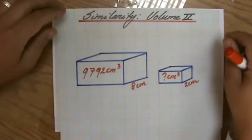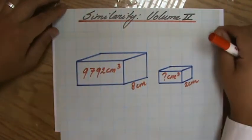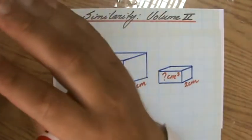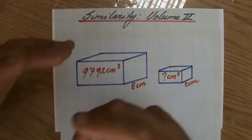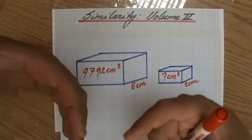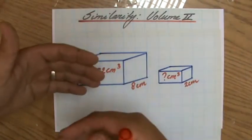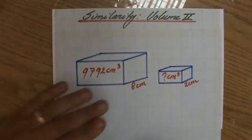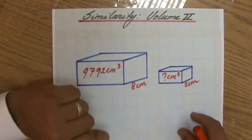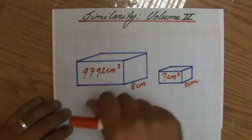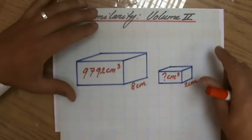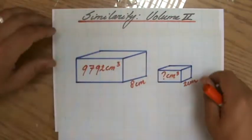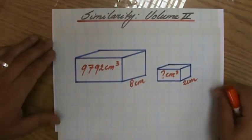It's the last video of the playlist with regards to similarity. We have looked at similarity involving lengths, we have looked at similarity involving area, and now we have looked at similarity involving volume and how to treat the scale factor. I've explained this in my previous video, so make sure you have seen those, or you can check my site explainingmaths.com where you'll find all my resources nicely organized.